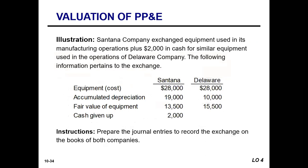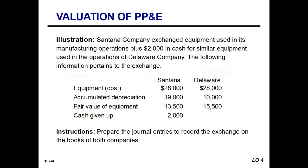To record this: debit cash $10,000, debit new machine $54,000, debit accumulated depreciation $50,000, credit old machine $110,000, credit gain on disposal of machinery $4,000. We'll get some practice with these entries and calculations together in class.